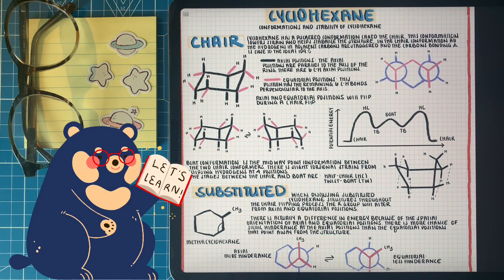But things are getting interesting when we start putting our groups on cyclohexane. As we can see below, I have an example of methylcyclohexane. That just means that on one of the carbons of cyclohexane, we replace the hydrogen with a methyl group. Now, things start getting interesting because there is a difference between the two chair conformations.